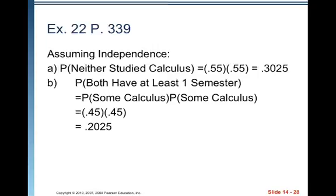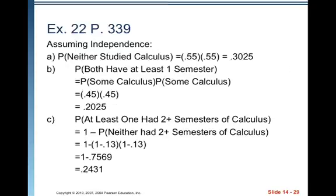All right. And C says at least one has had more than one semester of calculus. All right. So we're finding the probability that at least one had two plus semesters of calculus. Now this is one where considering the complement is helpful. So you might do one minus the probability that neither had two or more semesters of calculus or more semesters of calculus.